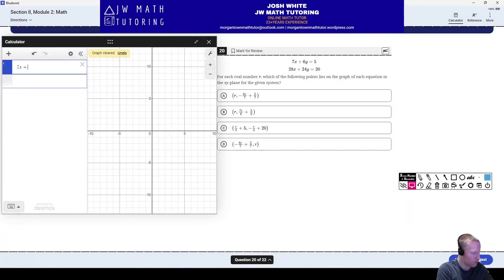So, again, you only have to graph one of the lines. If you don't believe me, you can graph, you can just see the second one's multiplied by four. Every term has a multiple of four. Therefore, it's infinite solutions. It's the same line.